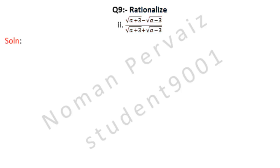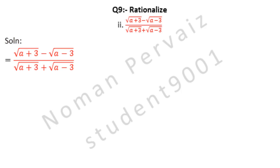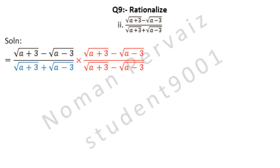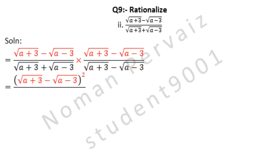Let's see its solution. Is equal to — we are taking the question as it is. Next we will multiply and divide by the conjugate of the denominator. The denominator is indicated in blue color, which is under root A plus 3, plus under root A minus 3. Its conjugate will be under root A plus 3, minus under root A minus 3. So we have multiplied and divided with the conjugate, which is under root A plus 3, minus under root A minus 3.